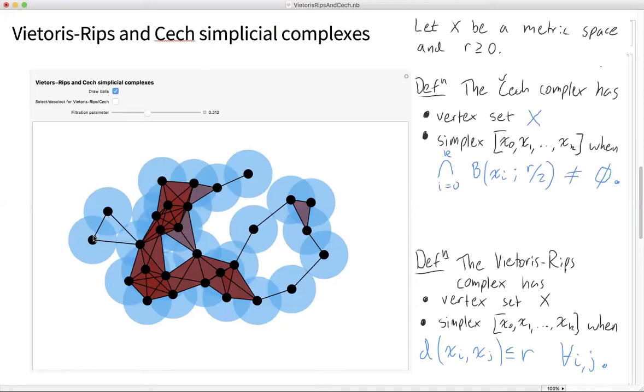In this picture right here, because this edge is length at most r, this edge is length at most r, and this edge is length at most r, then in the Vietoris-Rips complex, which I'm about to switch to now, we have that simplex.